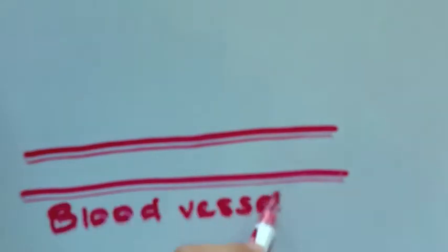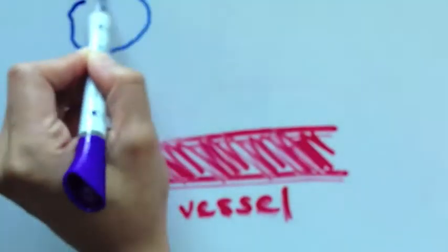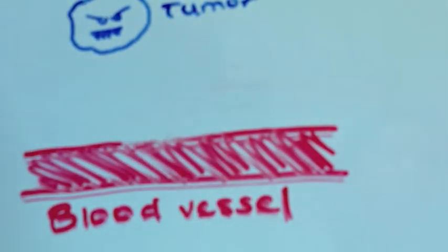Tumors require a blood supply to grow, without it they can lay dormant for months. Without an adequate blood supply, a tumor can only grow to about 2 millimeters, which is 100 to 300 cells.